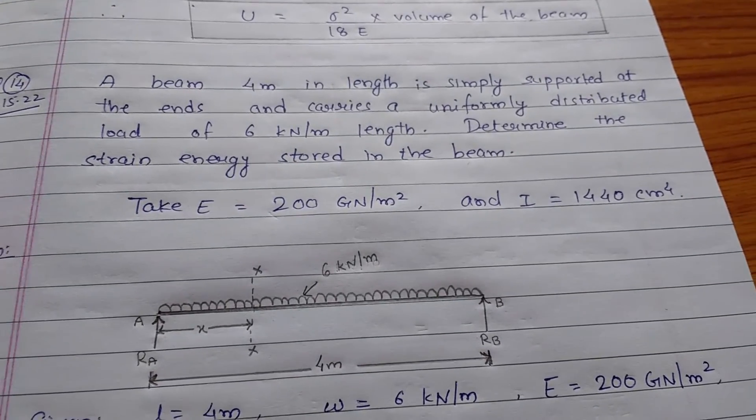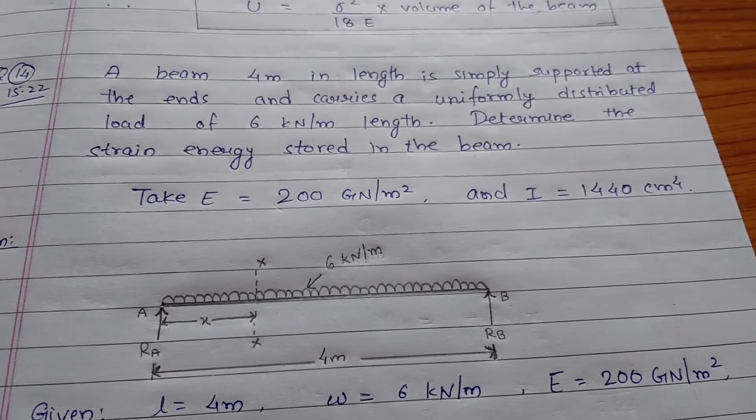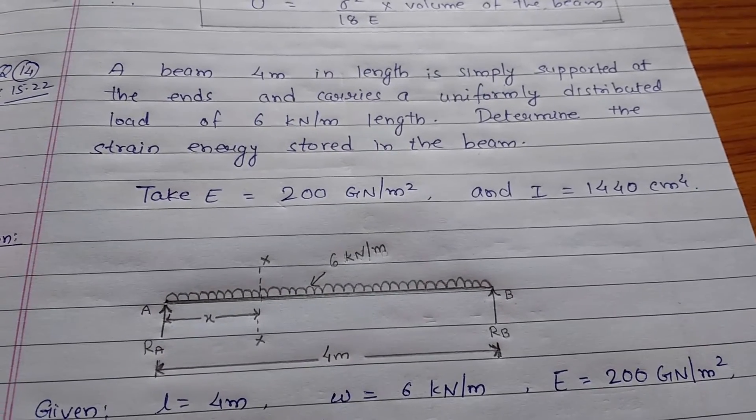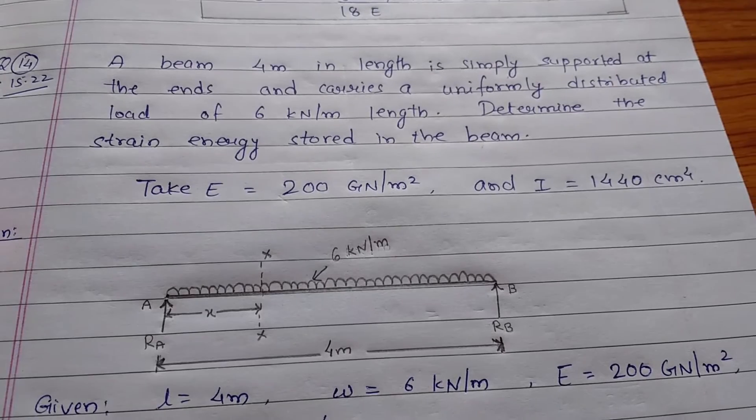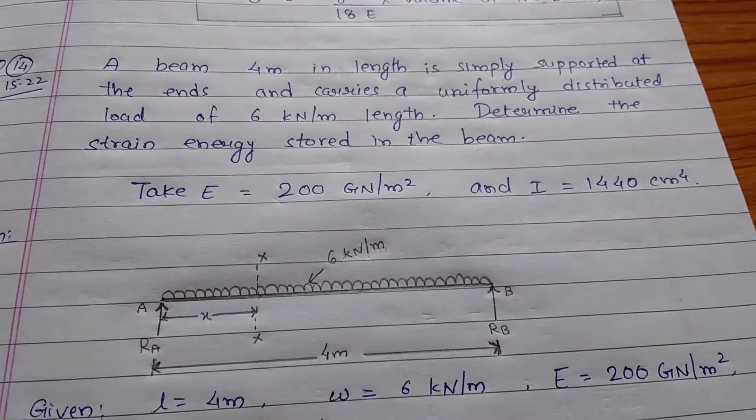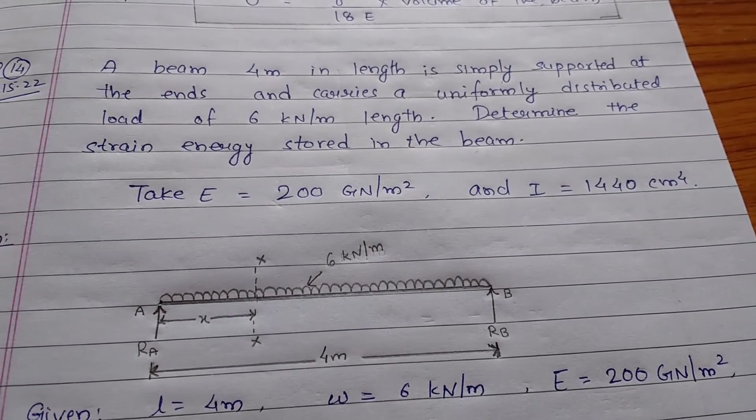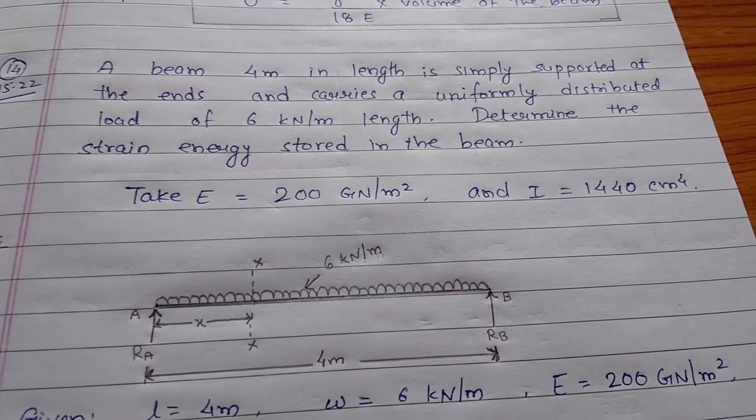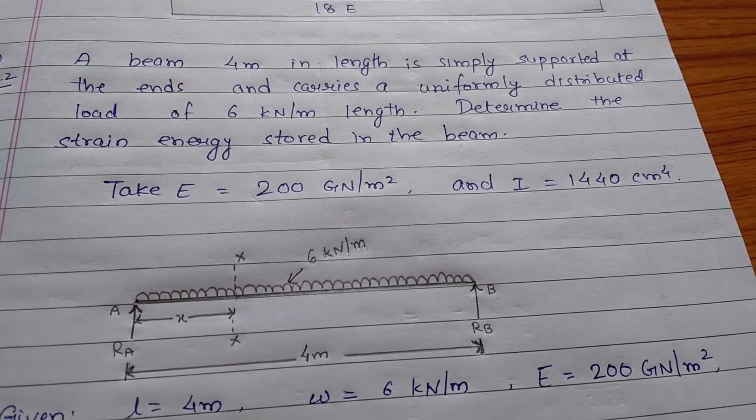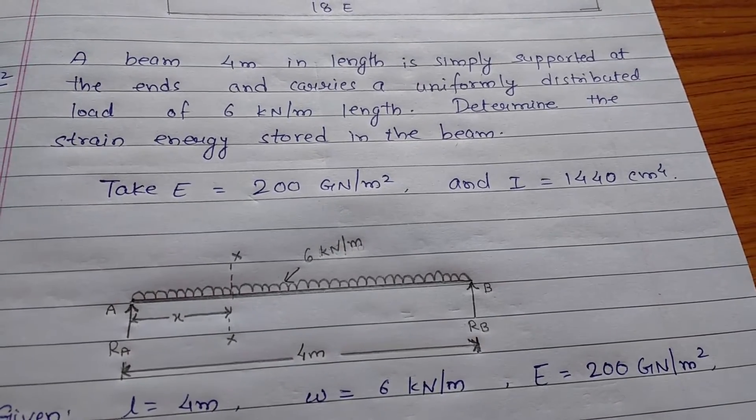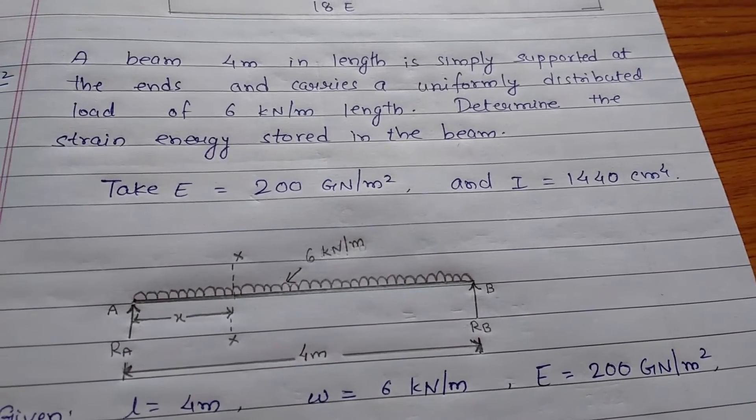A beam 4 meters in length is simply supported at the ends and carries a uniformly distributed load of 6 kilonewtons per meter length. Determine the strain energy stored in the beam, taking modulus of elasticity as 200 gigaNewtons per meter squared and moment of inertia equals to 1440 centimeters to the power 4.